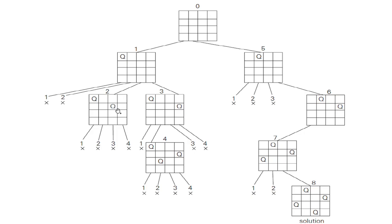Instead of keeping the second queen in the third column of the second row, I will try to keep it in the fourth column. If I place it there, the third queen cannot be placed in the first column due to conflict. But I can place it in the second column. Next, I will try to place the fourth queen in the fourth row — but all four columns have conflicts. So this path will not lead to the solution either, and I have to backtrack and follow a different path.